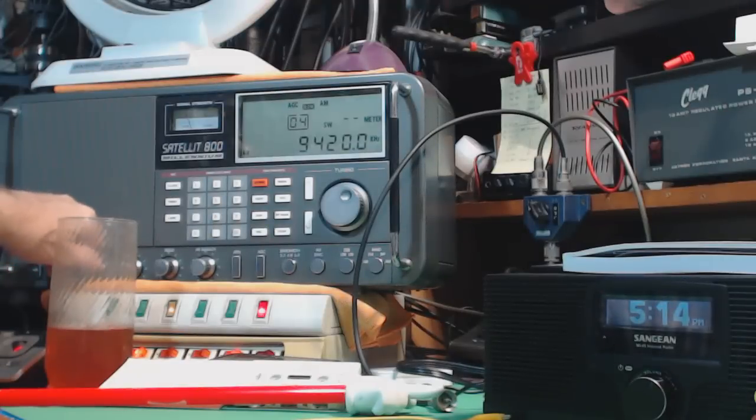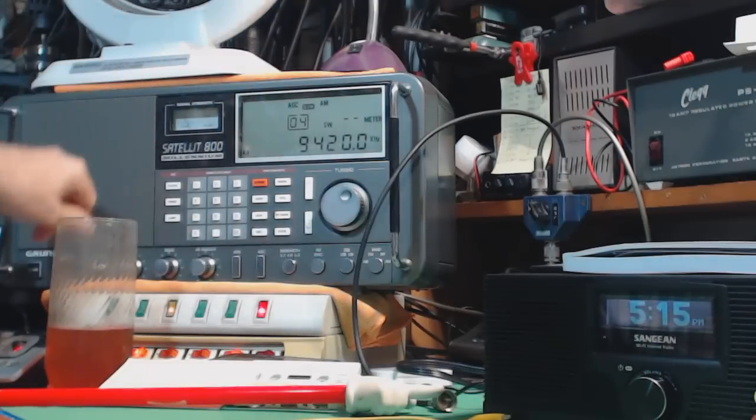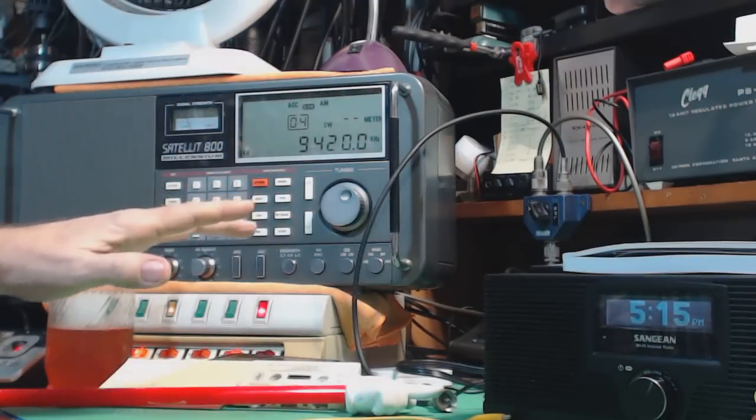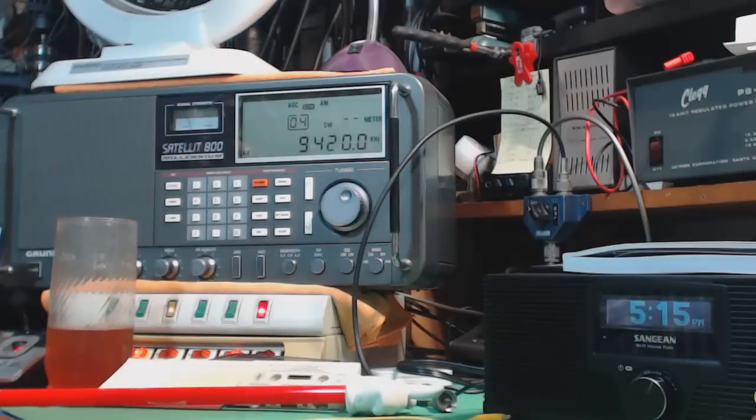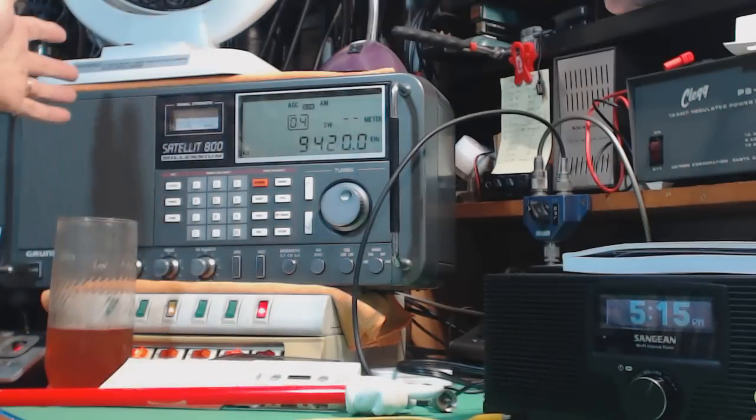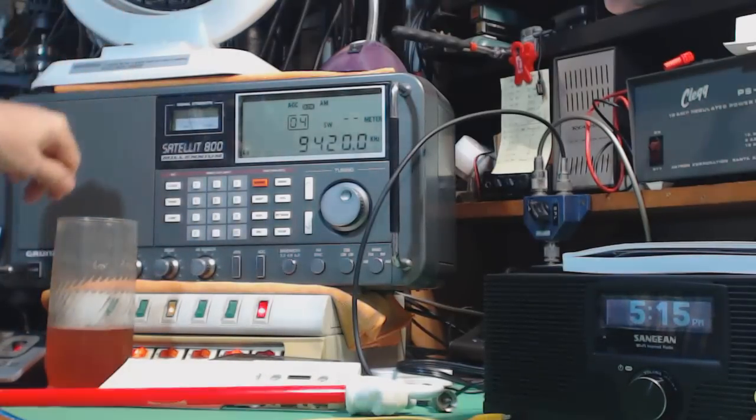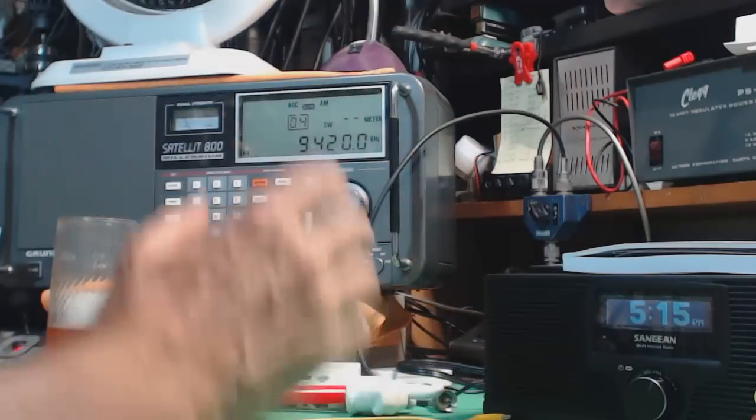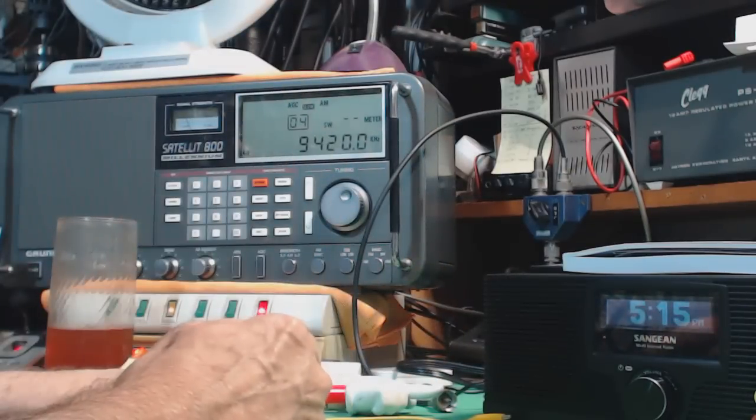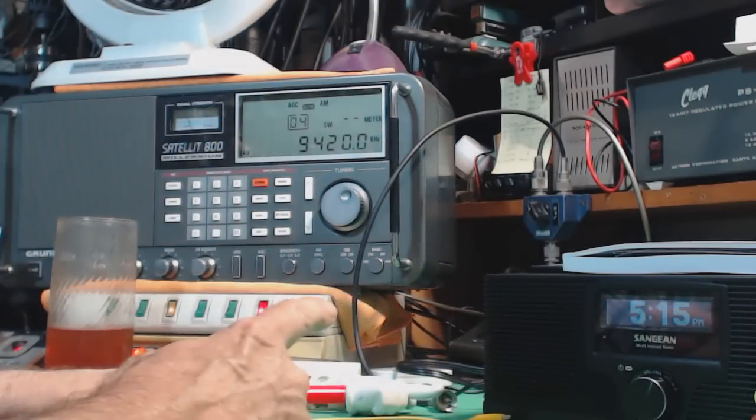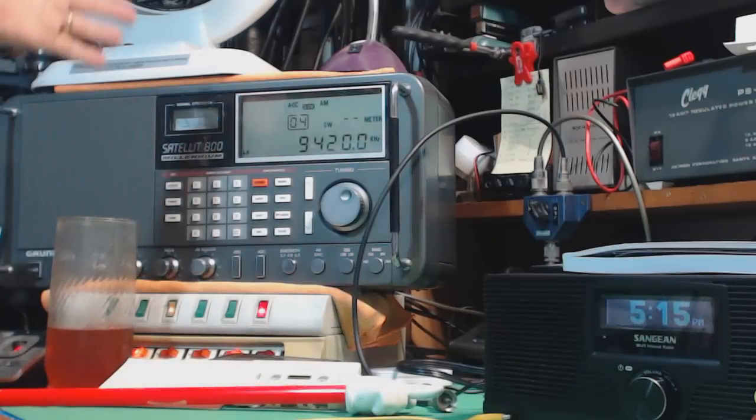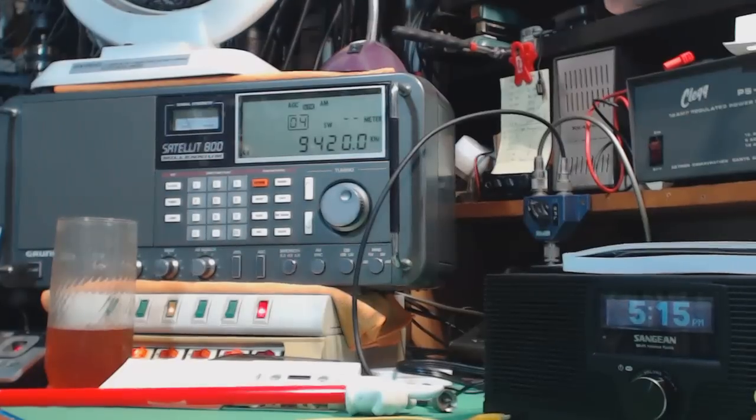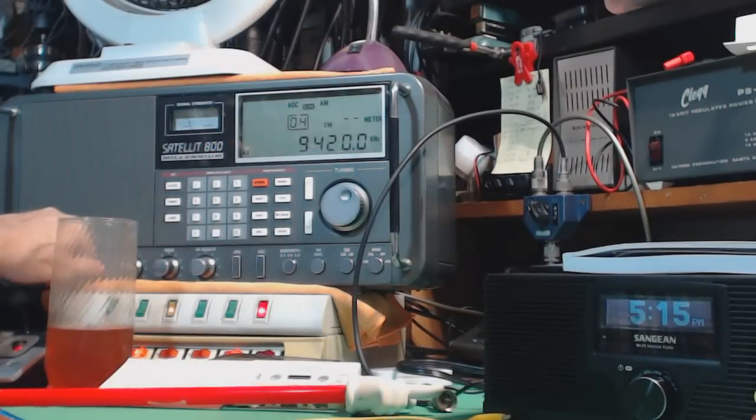That's music so I can't leave it on very long. That's another station though, booming in. The noise level right now is way down, it's like an S2. I'm using - okay, I forgot to tell you - I'm using my 31 foot vertical MFJ antenna. And of course this is my Grundig Satellite 800.